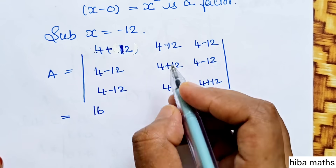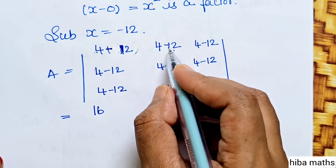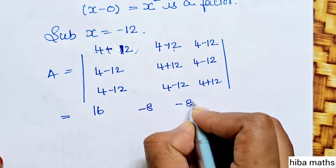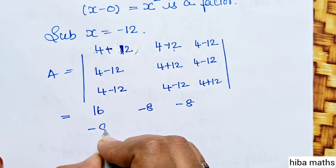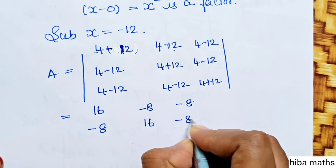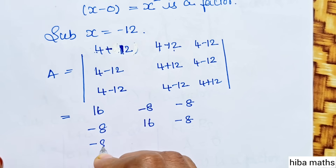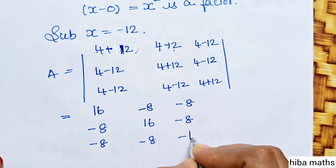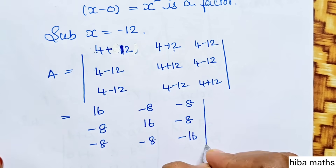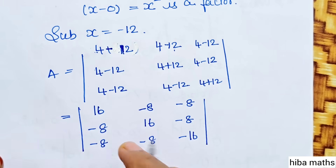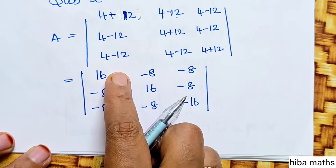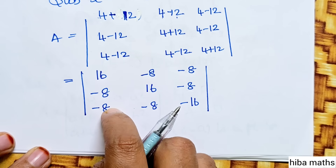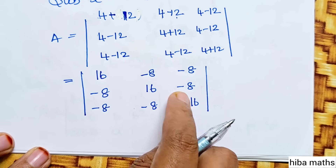The diagonal values become 4 plus 12 equals 16, with entries 12, 4, and 8, giving minus 8. The diagonals are 16, minus 8, minus 16. So 16 equals minus 8, and minus 8 equals minus 8. The complete value is 0.